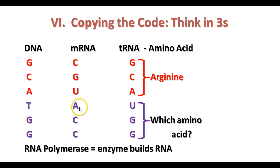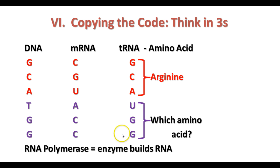TGG has the codon ACC in the messenger RNA, which is UGG in the transfer RNA. Remember, U replaces T in RNA, but the sequence is the same. This carries an amino acid — but how do we know what the amino acid is? We need to look at how that works.